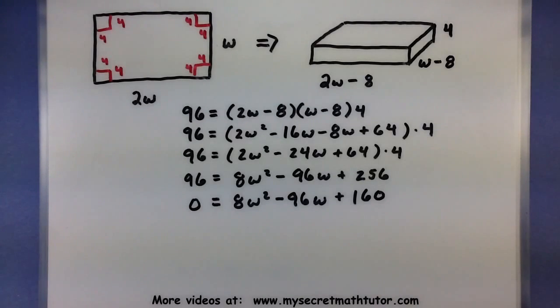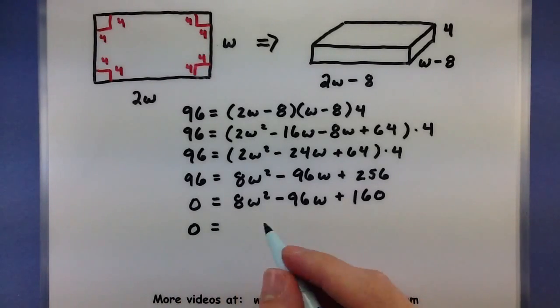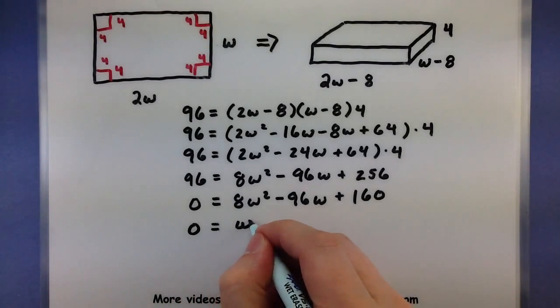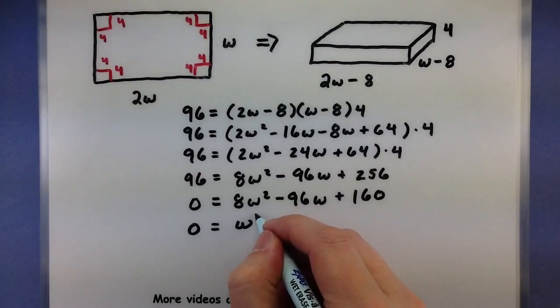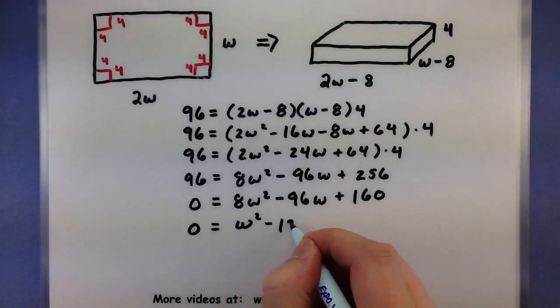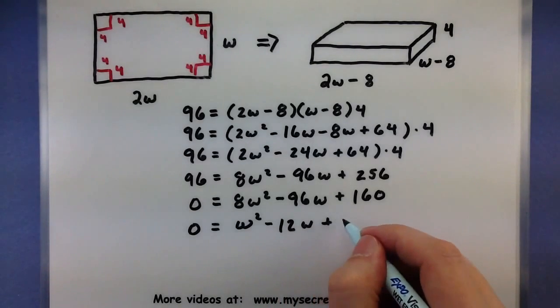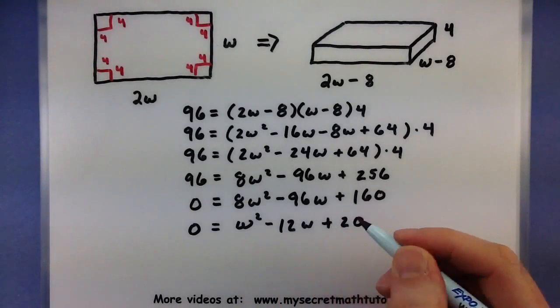So this is our quadratic that we're now trying to solve. Some of the numbers in here are kind of large. But it looks like I can divide everything by 8 to make them a little bit smaller and make my job easier. So 8 divided by 8 is 1. So there's our W squared. 96 divided by 8 is 12. And 160 divided by 8 is 20. Perfect.